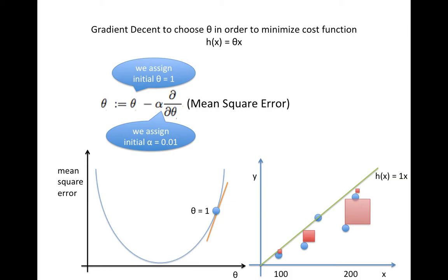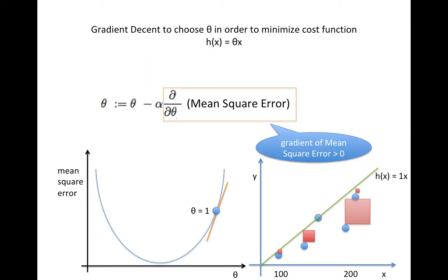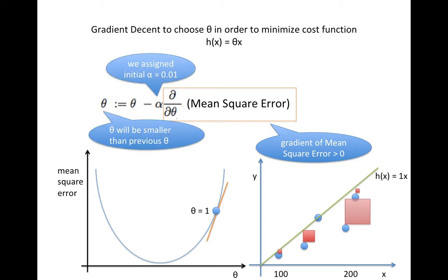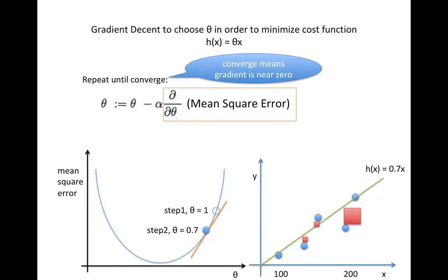Before starting gradient descent, we must initialize the learning rate and theta. Let's use 0.1 as the learning rate and 1 as theta. From the left chart, the derivative of the mean square error is greater than 0. Since both the learning rate and theta are greater than 0, the next theta we try will be smaller than the current theta. We repeat this step until the objective function — the mean square error — converges near its minimum point.